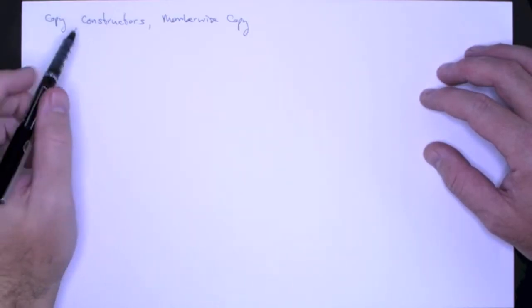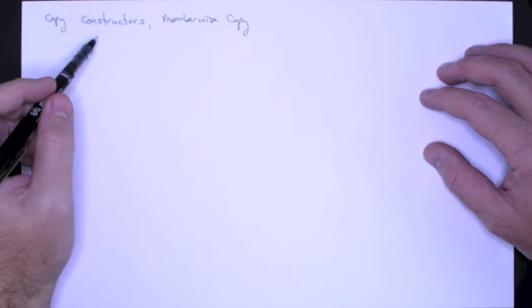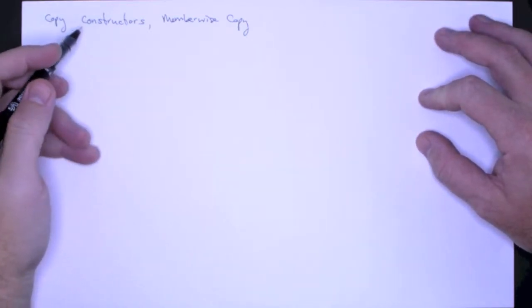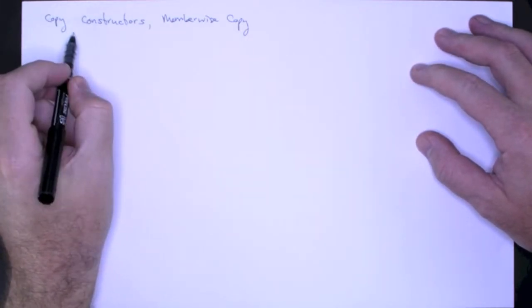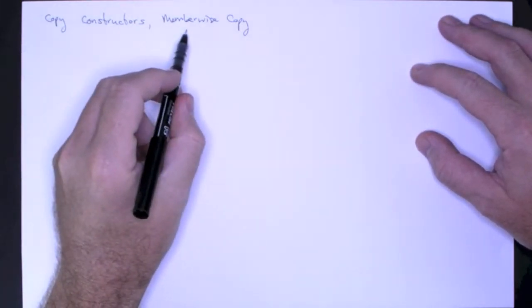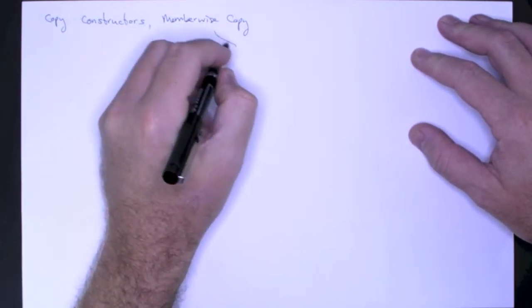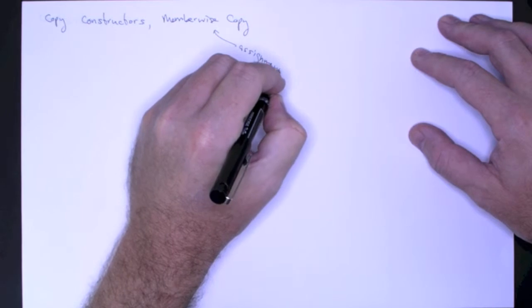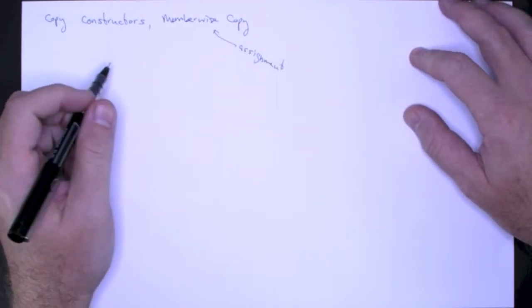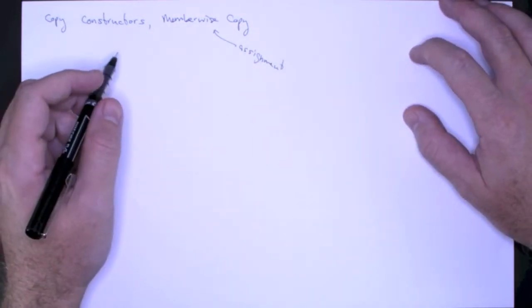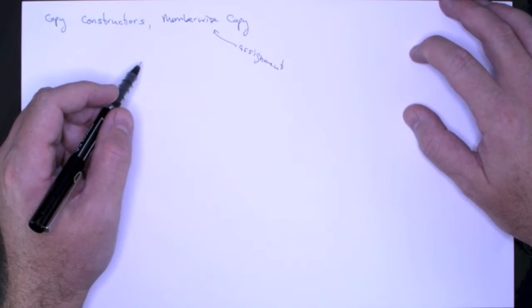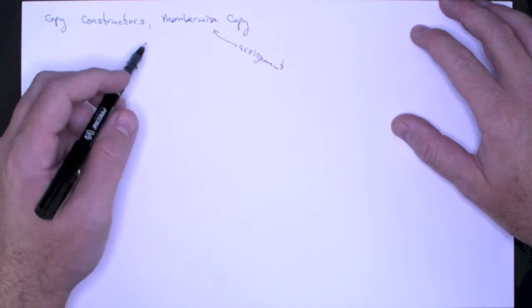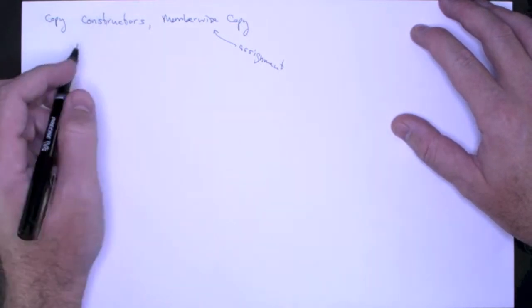When writing programs, we often need to copy an object, and there are two mechanisms for doing that. We can use a copy constructor, or we can use member-wise copy, which is really just assignment. But we use member-wise copy when we're talking about assignment of class objects, because what's happening is each private data member is being copied over, which is why we call it member-wise copy.